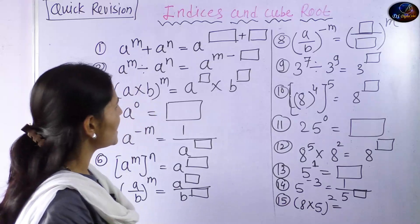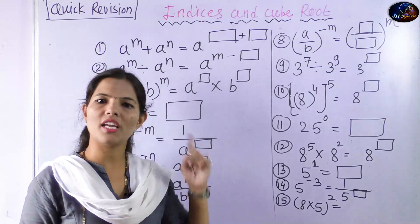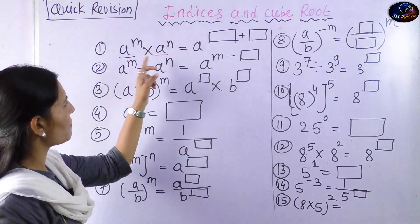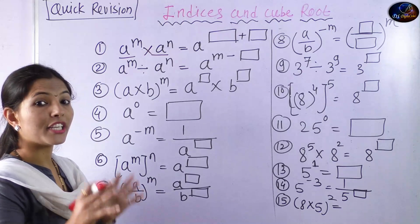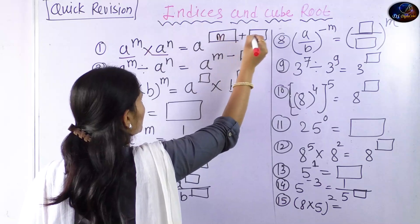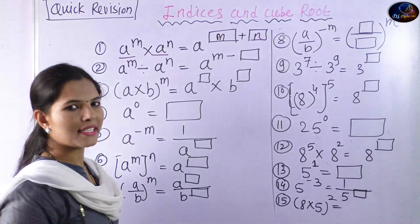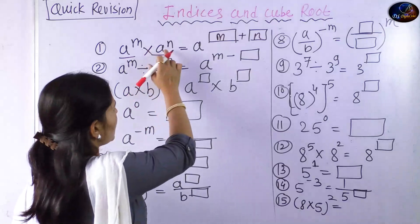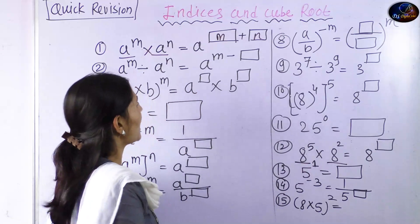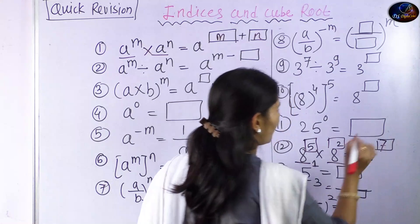The first rule: we have a raised to m, multiplied by a raised to n. Here, a is the base. What you have to do is add the exponents. So a raised to m multiplied by a raised to n is equal to a raised to m plus n. Let's apply this rule with examples to find our answer.